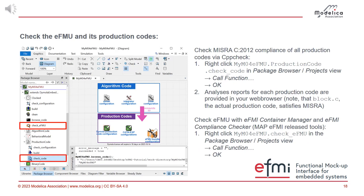Before the break, you can already check MISRA rules for the production code. In the software distributed to you, there's a CPP check with MISRA rules pre-configured. Go to the production code part, call check code, and you will get a MISRA report in your browser. There will be a lot of items reported, but the interesting part is that the actual controller called block C is free of any problems — because the other code is wrapper code used later for software-in-the-loop simulation. The actual controller code is MISRA compliant. You can also run MAP EFMI tools like the container manager and compliance checker to confirm this is a valid EFMU.